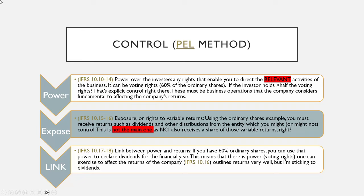So it's: power over the investee, explicit or implicit; exposure to variable returns or rights — because if you're earning a cumulative dividend, you have rights to those dividends; and the link between variable returns and power. Those are the three things you need to have for control under IFRS 10.